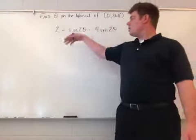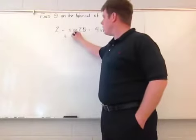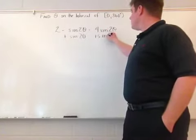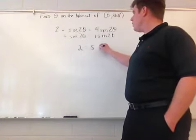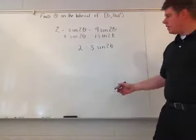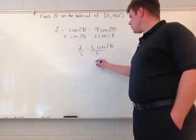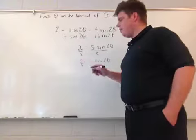I'm just going to combine some things. So, I'm going to add sine 2 theta to both sides. Sine 2 theta plus sine 2 theta leaves me with 2 is equivalent to 5 sine 2 theta. So, now what I need to do here is I'm going to go ahead and divide by 5.